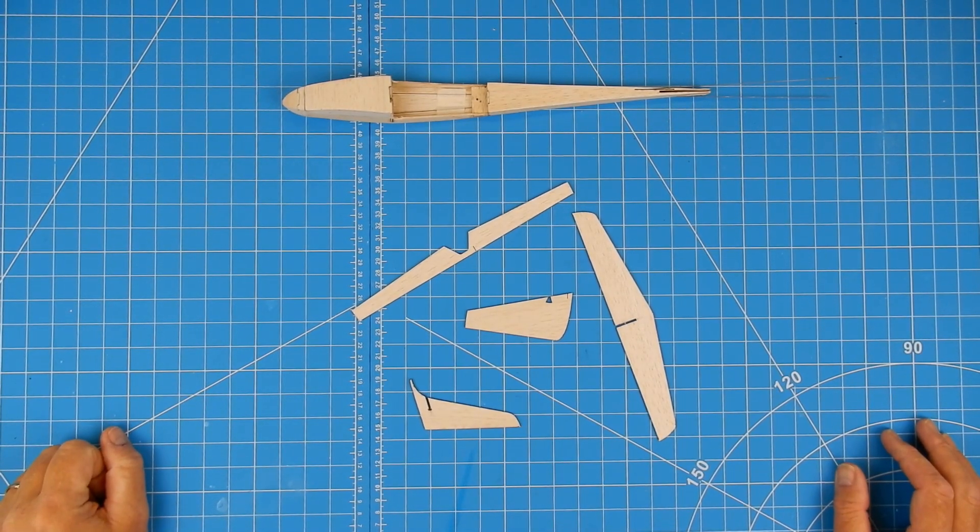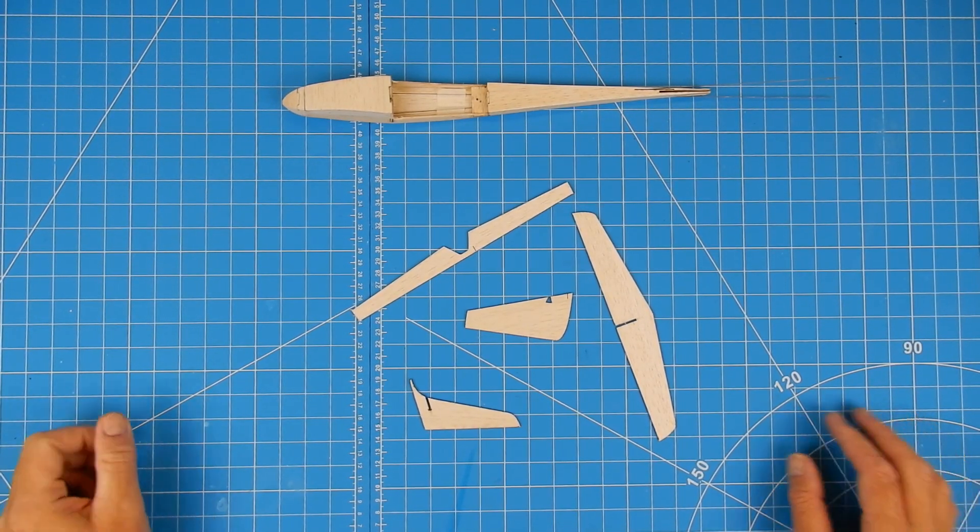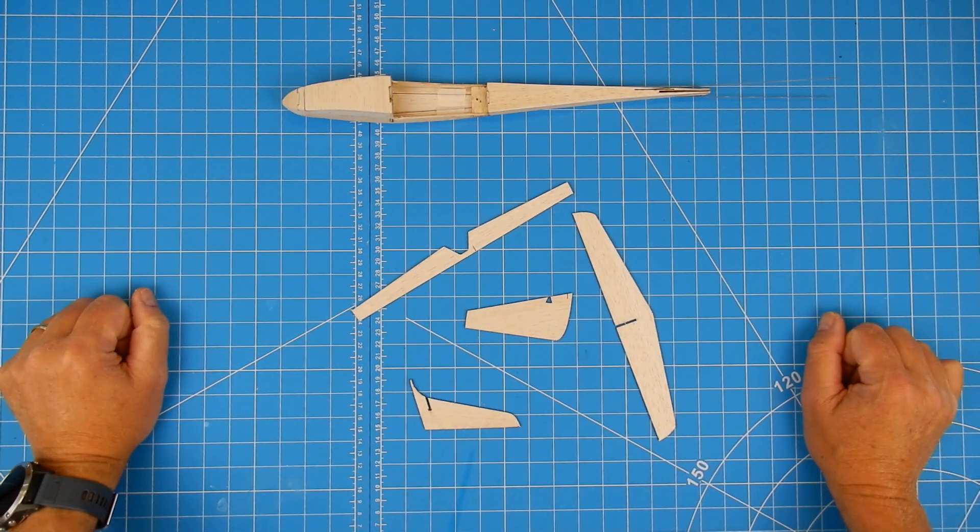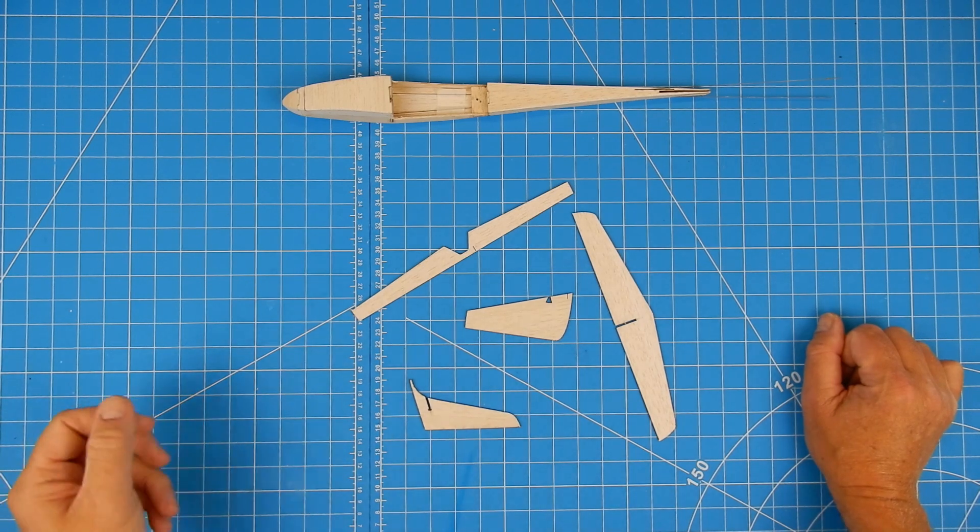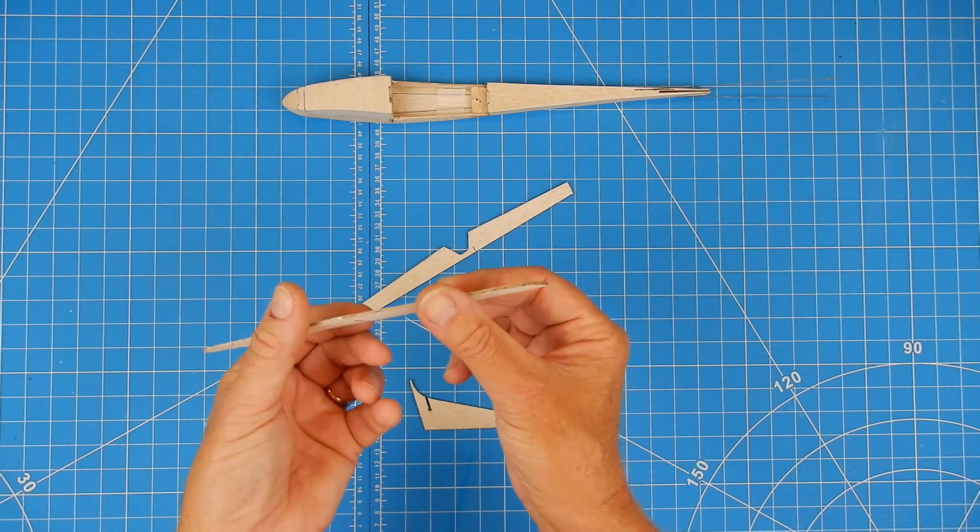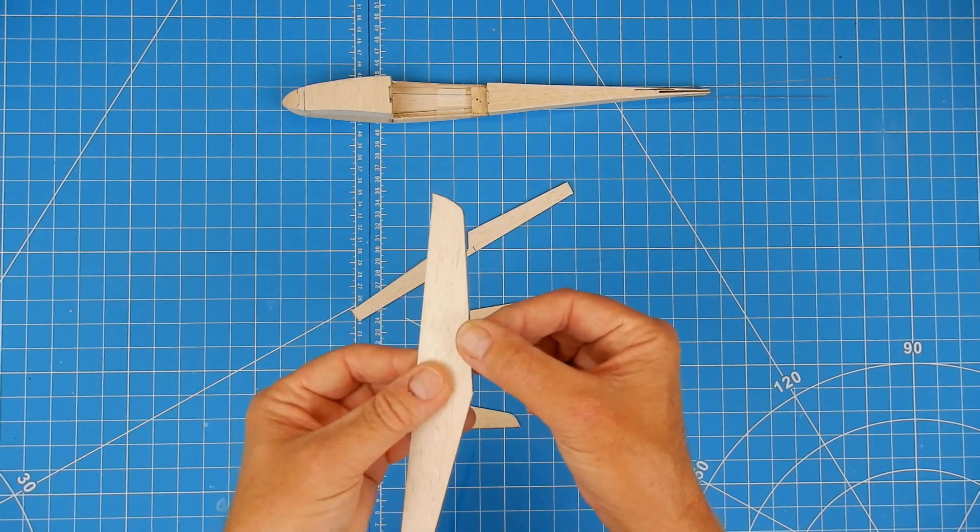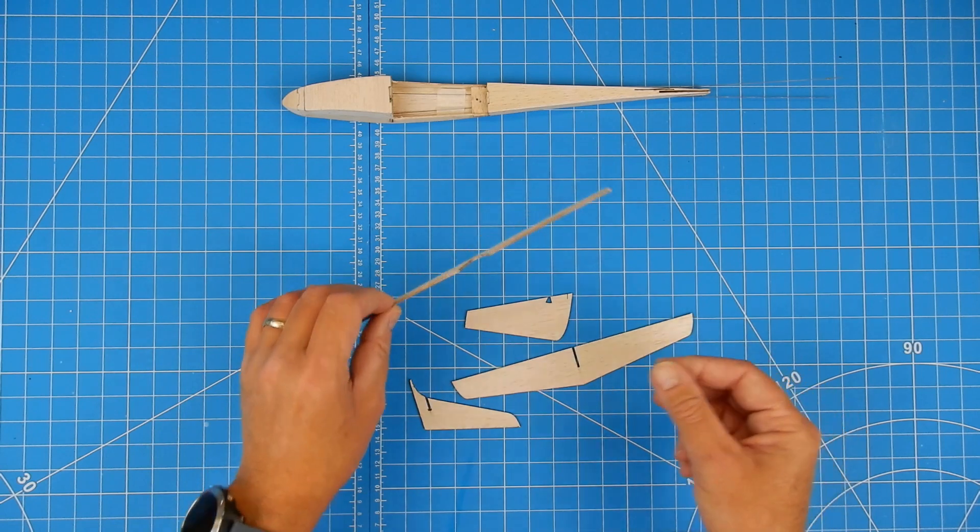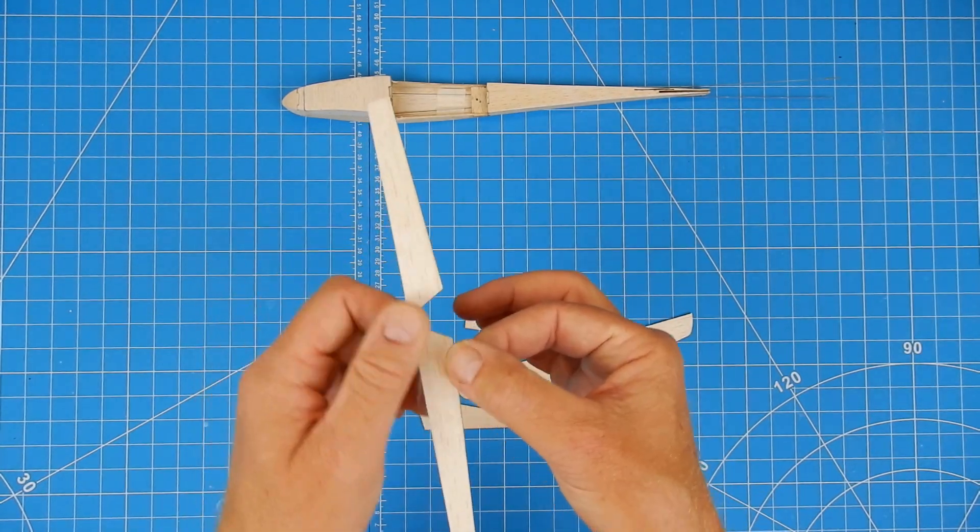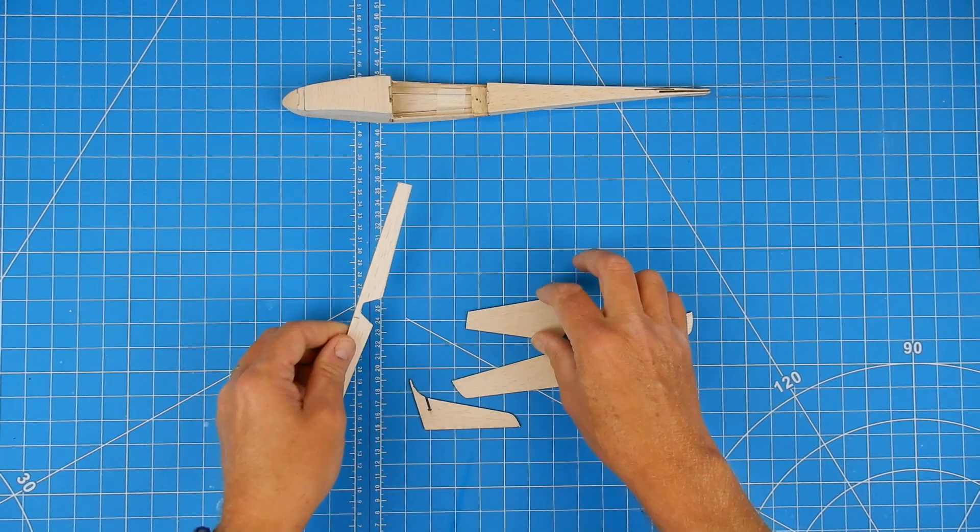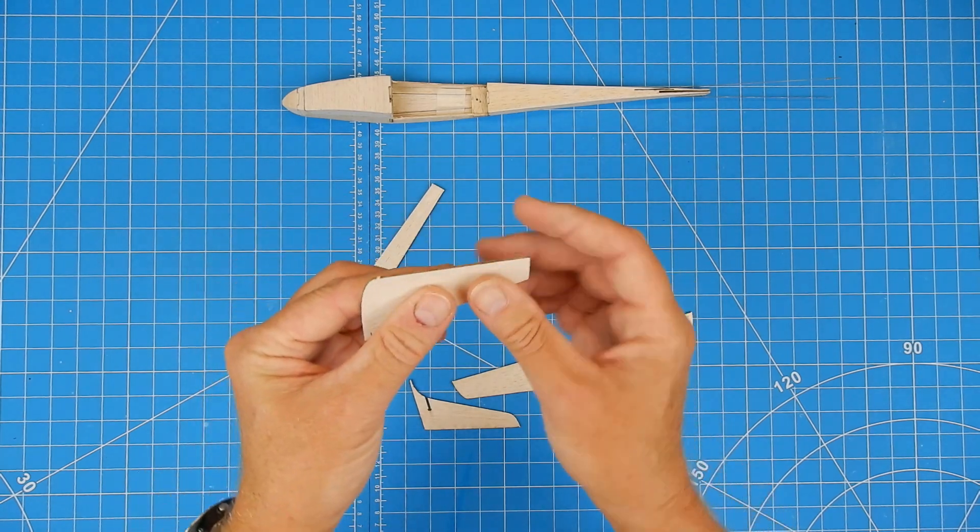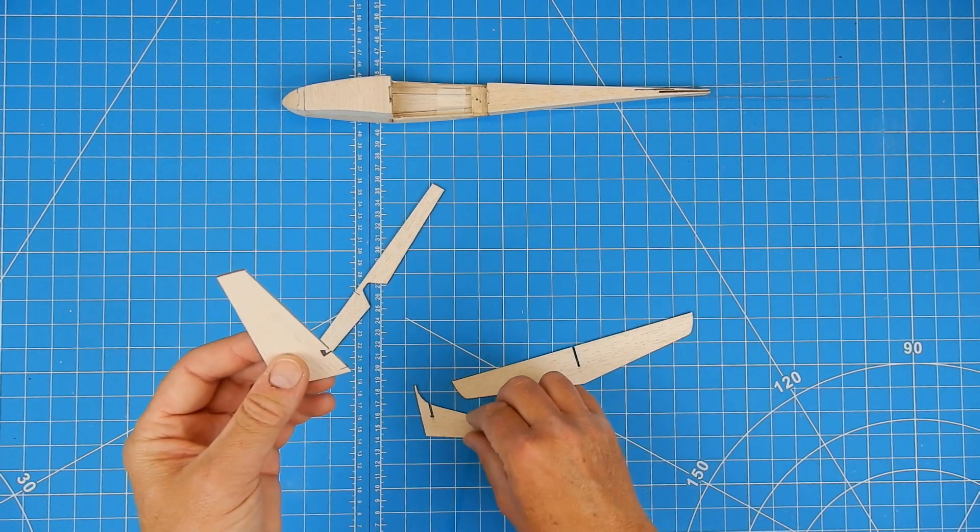So the final thing with the fuselage is obviously we've got to do the tail surfaces. Now we've got to think about the process of how we're going to, how and when we're going to cover. So these don't really need massive amounts of aerodynamic sanding. I would just round the leading edges off smoothly. If you wanted to you can cheekily take a little bit off the trailing edge to give it a nice smooth finish. And a little bit off the rudder but they are quite thin anyway. So just be careful when you're doing that.